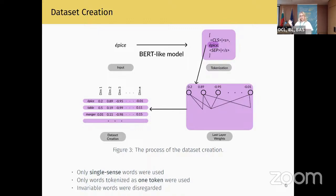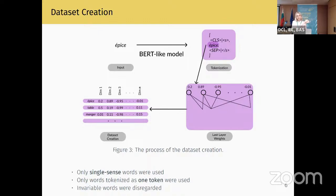What needs to be highlighted: with this approach, we decided to remove words with multiple senses, because the French language has many words that can be both nouns and verbs. Since one of the target features of interest was part of speech, we decided to remove this ambiguity and keep only single-sense words. Additionally, we were picking only one token per word, so if a word was tokenized into multiple tokens, we disregarded it for the scope of this project — though we believe this needs to be considered in further work. Invariable words — those without gender or plural form — were also disregarded.